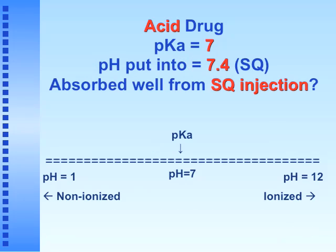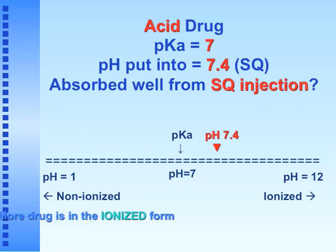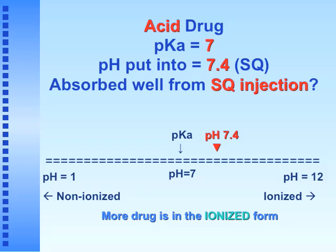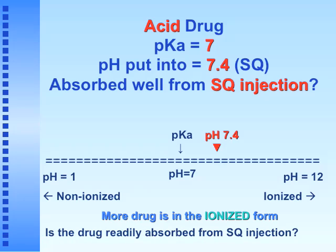Problem 3: acidic drug, pKa = 7, subcutaneous injection at pH 7.4. At pH 7.4 more of the drug is in the ionized form. Is the drug readily absorbed from subcutaneous injection? Yes — because ionized means hydrophilic, and it easily enters and moves through that water-based environment.